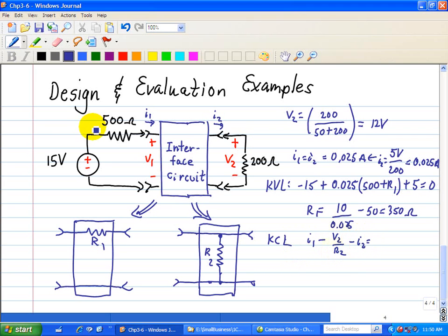The current I1: we have 15 volts at one side of the 500 ohm and 5 volts at the other side. So 15 minus 5 is the voltage across the 500 ohm resistor.